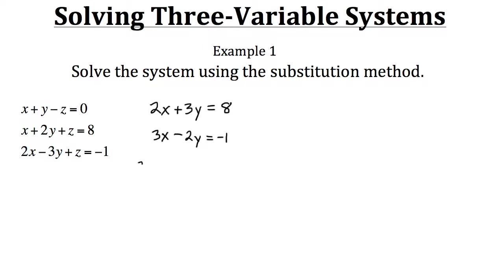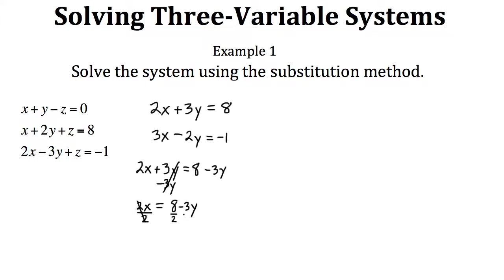We have two x plus three y equals eight. To isolate x, we first subtract three y from both sides, leaving us with two x equals eight minus three y. Then we divide both sides by two, giving us x equals four minus three-halves y. So now we have an expression for our x variable.